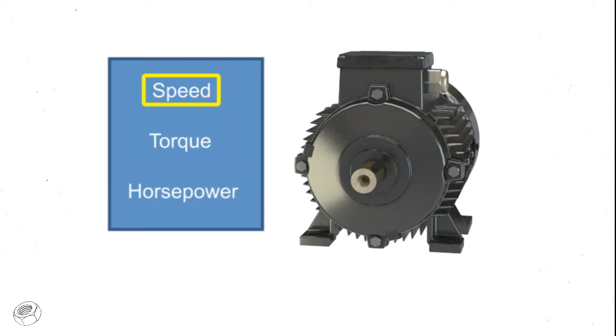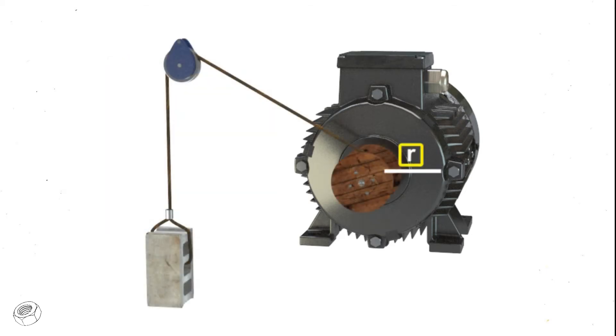Speed is defined as how fast the motor performs its work. For example, a shaft can rotate slowly or quickly. The typical units of measurement for rotational motor speed are revolutions per minute or RPM.